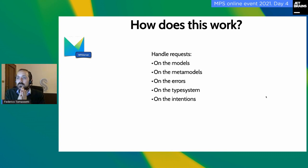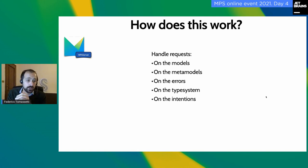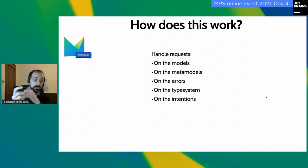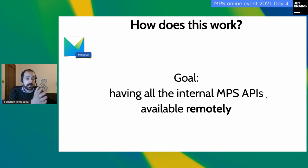How does MPS Server work? Basically it can handle requests regarding the models — like give me all the nodes of a certain concept — or the metamodel, so I can ask what properties a concept has. On errors, I can get the errors associated with a node. On the type system, I can calculate the type of a certain node. For intentions, I can get the list of intentions and trigger them. The goal with MPS Server is providing remote access to all the internal APIs of MPS — in principle, very simple.